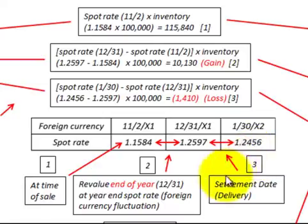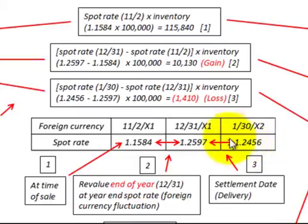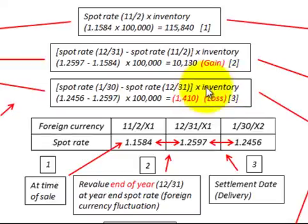Then you have to determine your settlement date or delivery date. Here you compare the spot rate at the end of the year with the spot rate at the delivery date. In this case we had a decrease from the end of the year to the delivery date in the next year. So you take the spot rate at the delivery date, subtract the spot rate at the end of the year, and multiply by your inventory amount. In this case we had a decrease of $1,410, so that would be a loss.